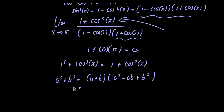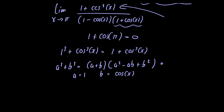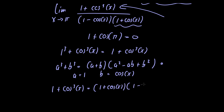Now let a be equal to 1 and b be equal to cosine of x. Using our formula, we have 1 plus cosine cubed of x is equal to 1 plus cosine of x multiplied by 1 minus cosine of x plus cosine squared of x.